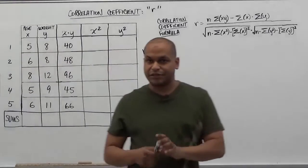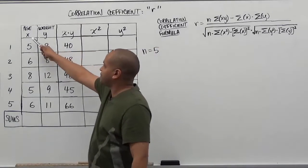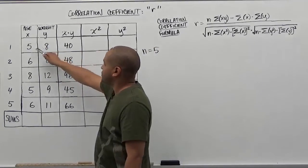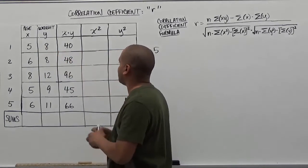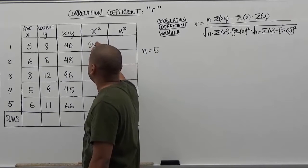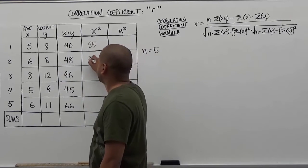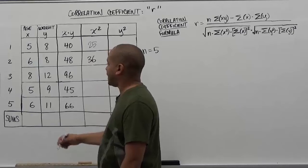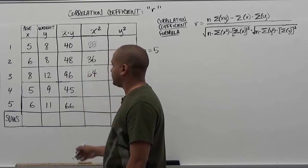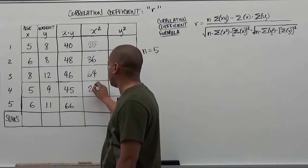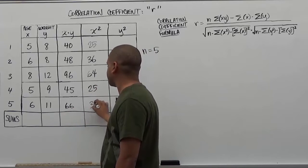The next column we want to do is the x squared column. We're going to take all our values of x and square them. The first sample is five squared — 25. Six squared would be 36. Eight squared will be 64. Five squared again is 25. And six squared again is 36.